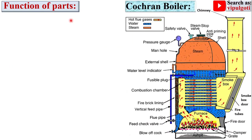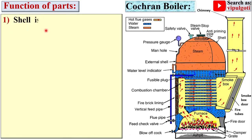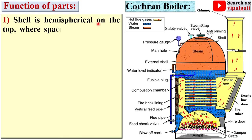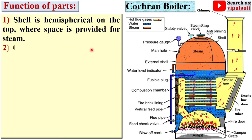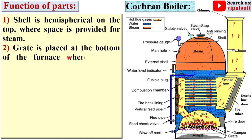Now, the function of parts. First, the shell is hemispherical on the top surface. You can see the top portion of the shell is hemispherical in shape, and space is provided there for the steam. Next, the grate is placed at the bottom of the furnace, where coal is burned.